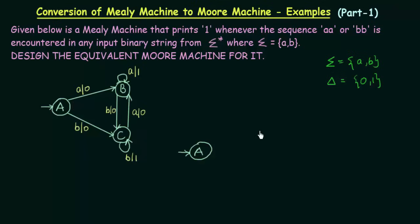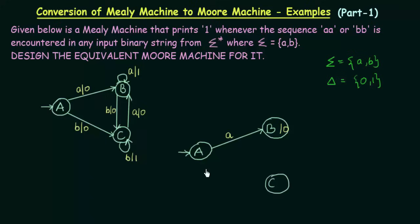Since A goes to B with output 0, I will create state B and associate output 0 to it. On getting input small b, A goes to state C with output 0. So I will create state C and associate output 0 to it as well.